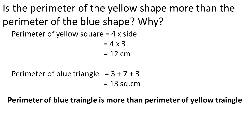Now let us find out the perimeter of blue triangle. Perimeter of blue triangle is equal to sum of all sides — the easy formula for a triangle. Addition of all sides is the perimeter. Perimeter of blue triangle is equal to 3 plus 7 plus 3. Adding all three numbers, we get 13. It is printed here as square centimeter, which is actually wrong — it should be 13 centimeter only, not square centimeter. That is a printing mistake. Perimeter is 13 centimeter of the blue triangle.